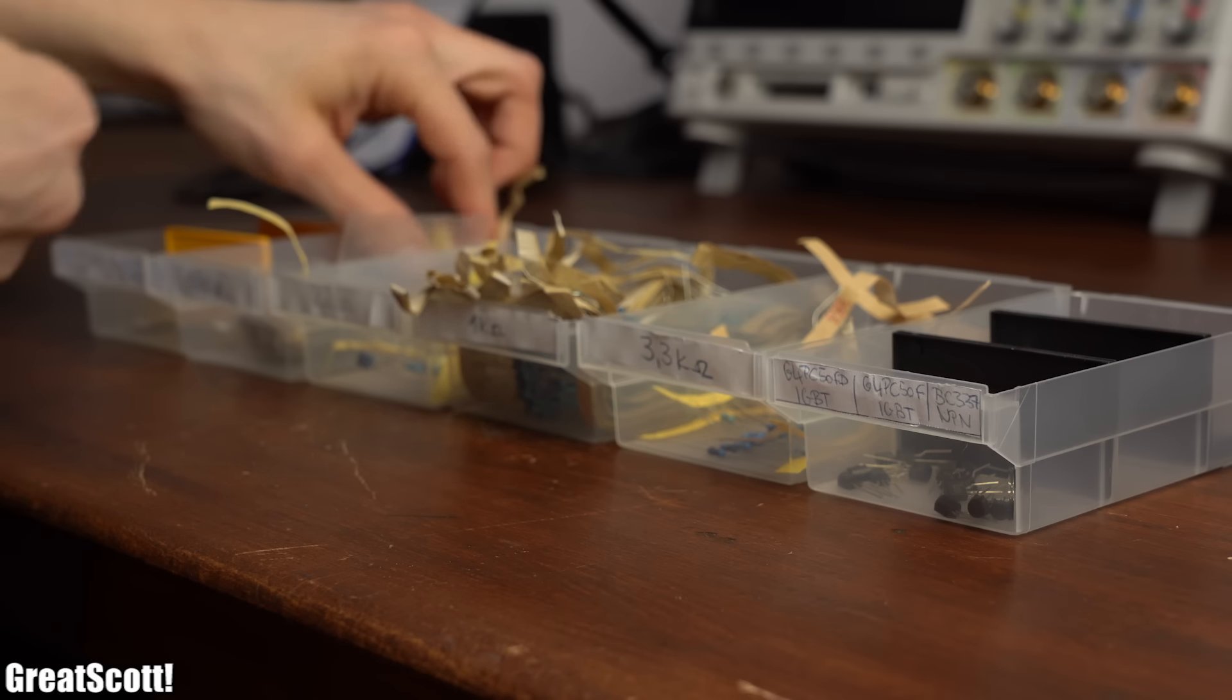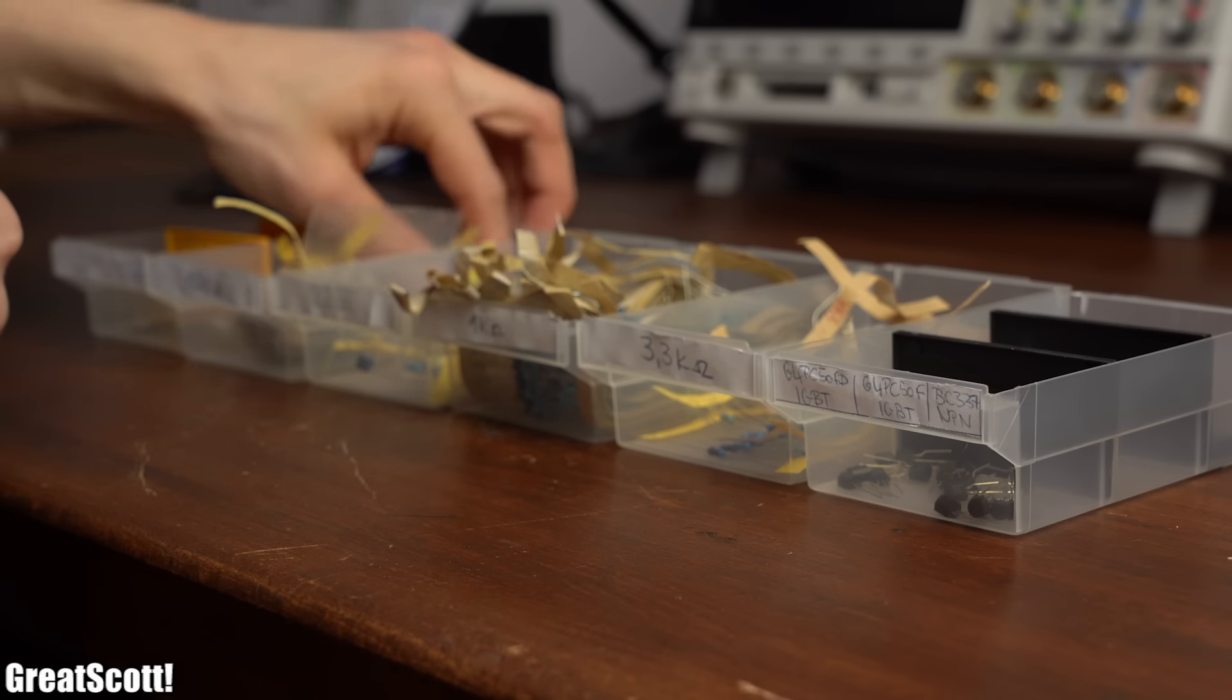First off, let's gather all the components we need for the class A audio amp. As you can see, we only need one BC337 NPN BJT, 4 resistors and 2 capacitors which we have to connect to one another according to this schematic. And since we want to amplify a stereo signal, we will need to build up the circuit twice.